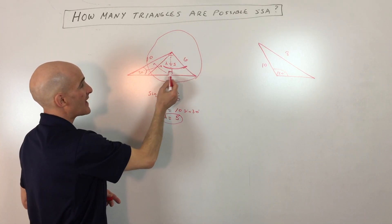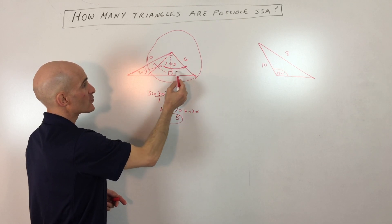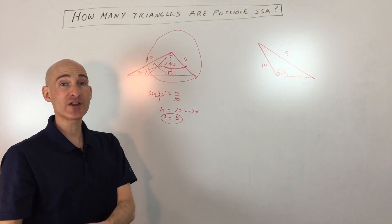If this side was exactly the same as the altitude—if this was 5—then when you rotate it, it would just barely touch the side right here, and there would just be one triangle, a right triangle.